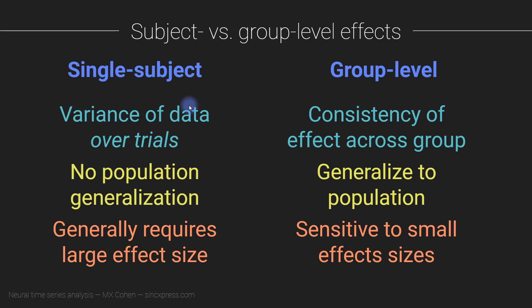In this video you learned about the difference between statistical significance testing within subjects versus at the group level. In psychology, neuroscience, biology, ecology, and sociology, people are primarily interested in group level analyses, mainly because we want to generalize to as large a population of humans as plausible — not just generalizing to other trials within a particular individual.